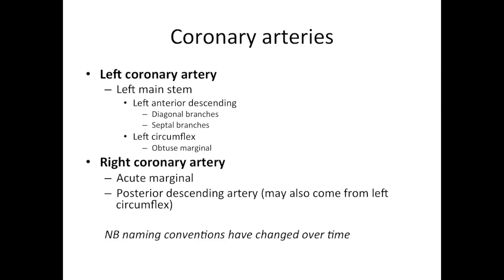Here are some words to remember — this is what we're going to be covering in this section. Coronary arteries can be split into two main arteries: the left coronary artery and the right coronary artery. The left coronary artery is divided initially into the left main stem, which splits into the left anterior descending and the left circumflex artery, both of which have their own branches.